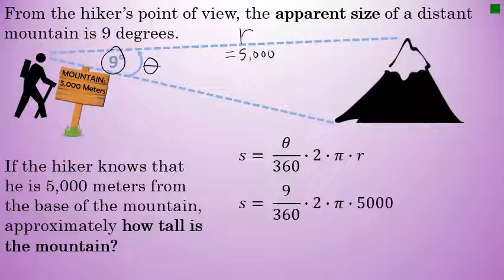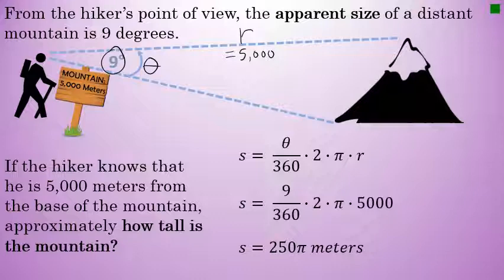All that remains now is some simple arithmetic, especially if you have a calculator to help you. 9 over 360, times 2, times 5,000 is 250. So the height of the mountain, in terms of pi, is 250 pi meters. Finally, let's round off our estimate to the nearest meter: 250 times pi is about 785 meters.